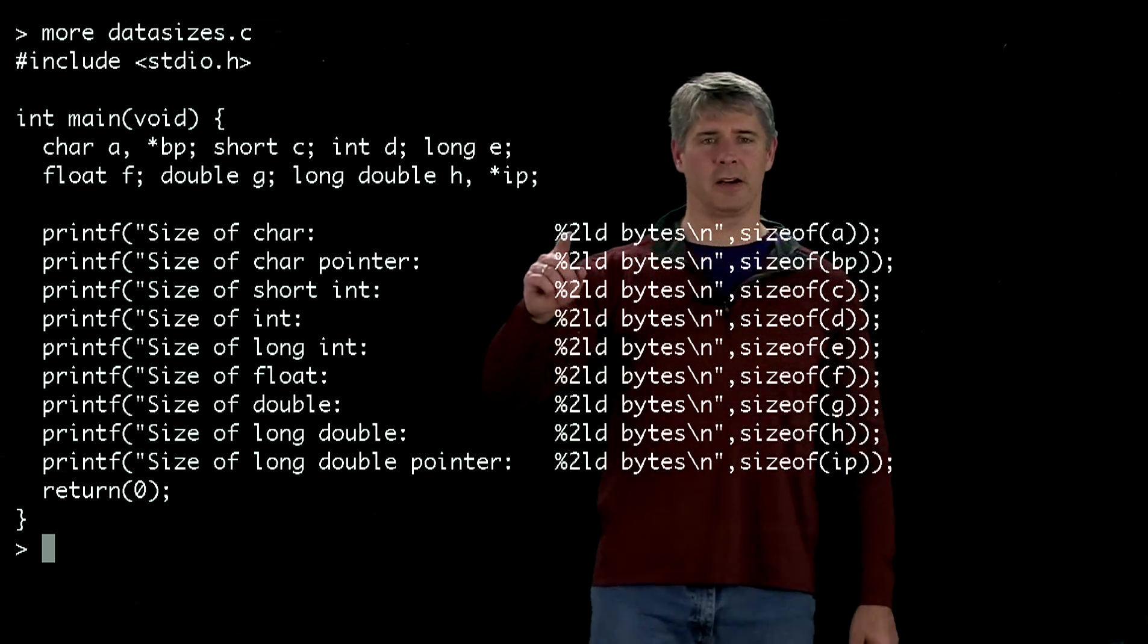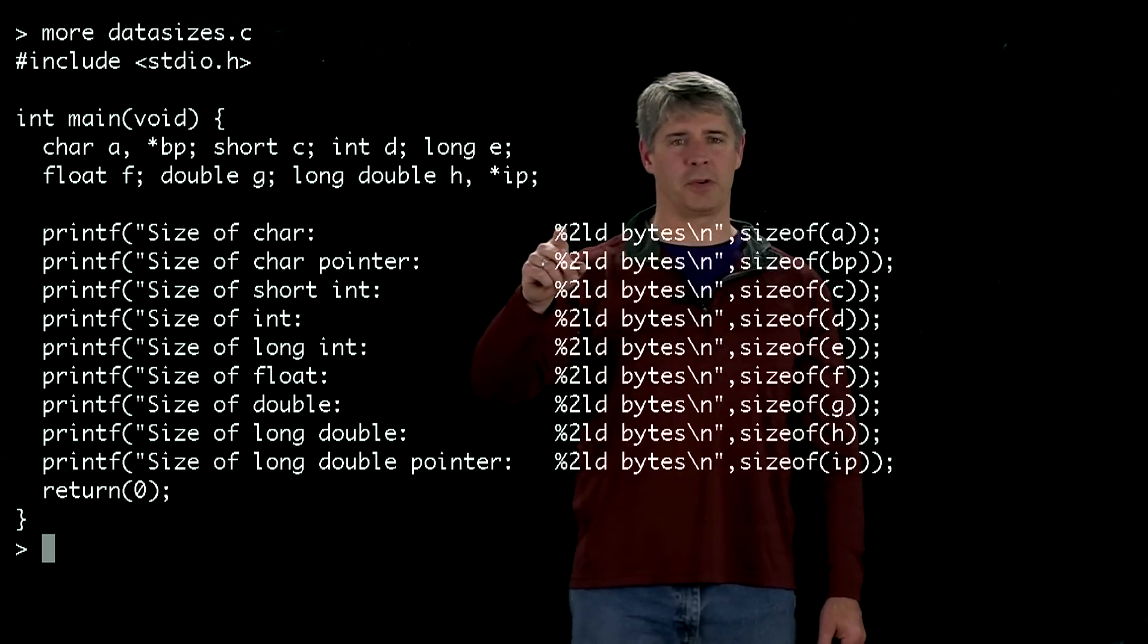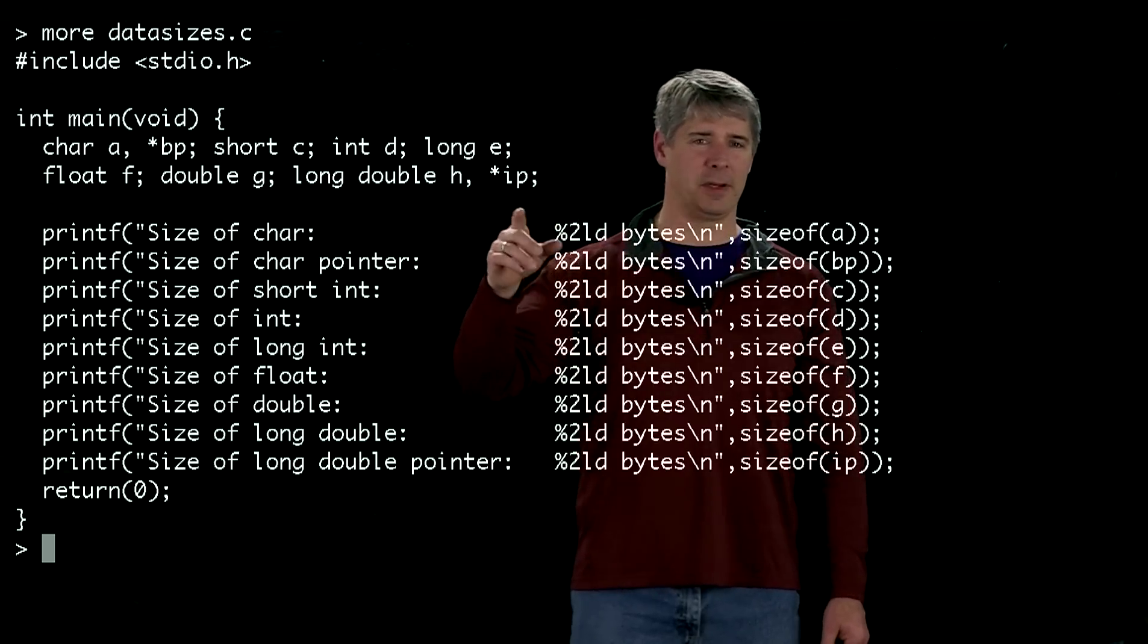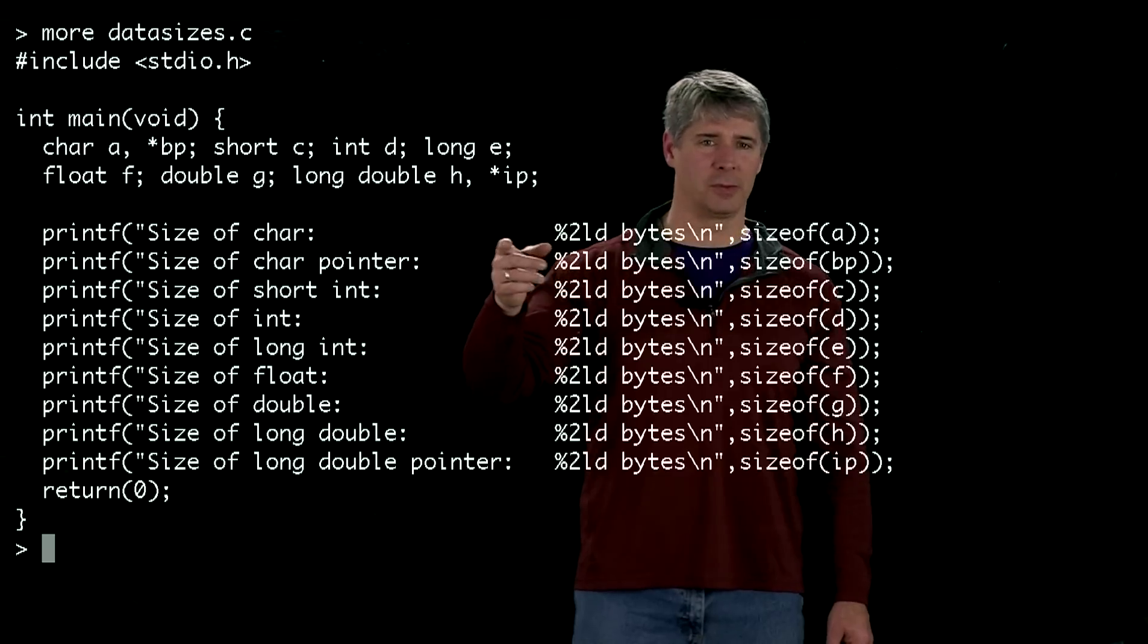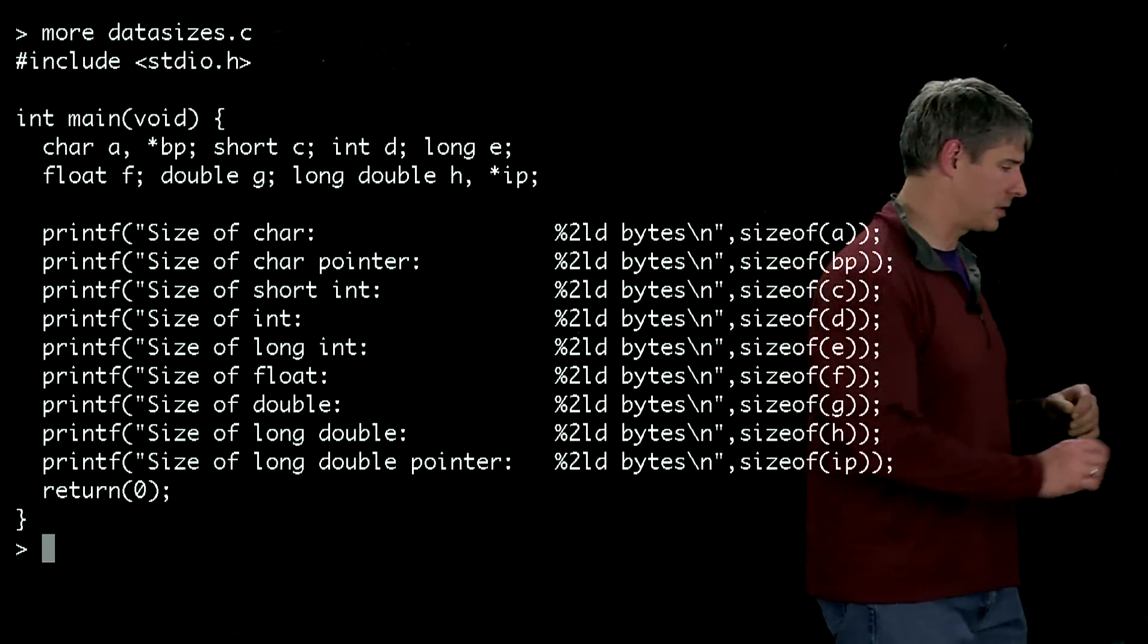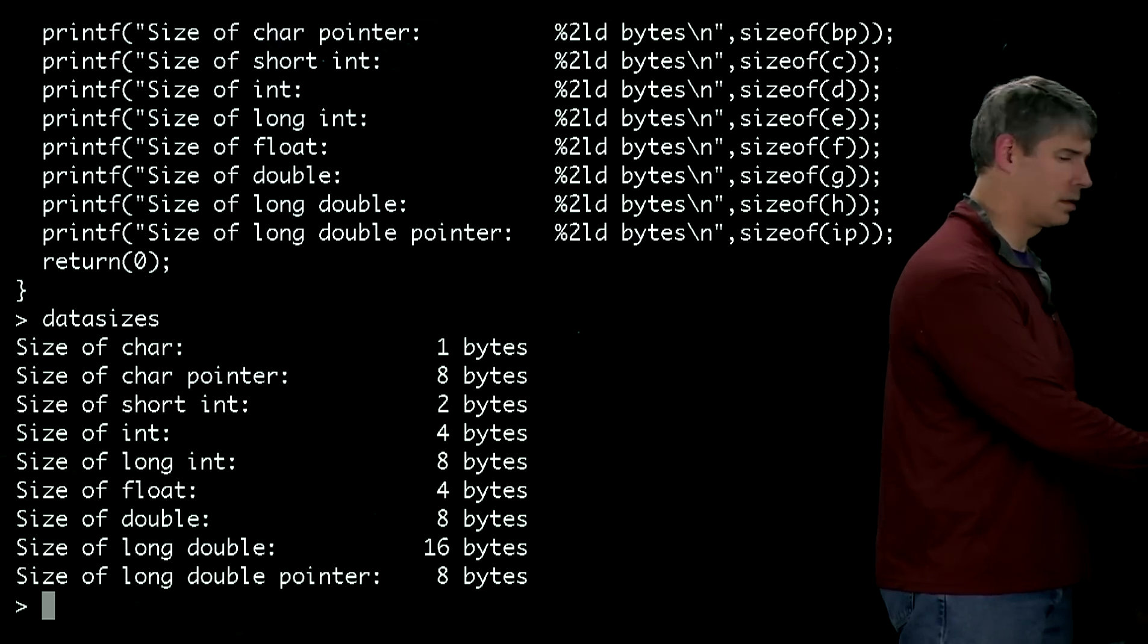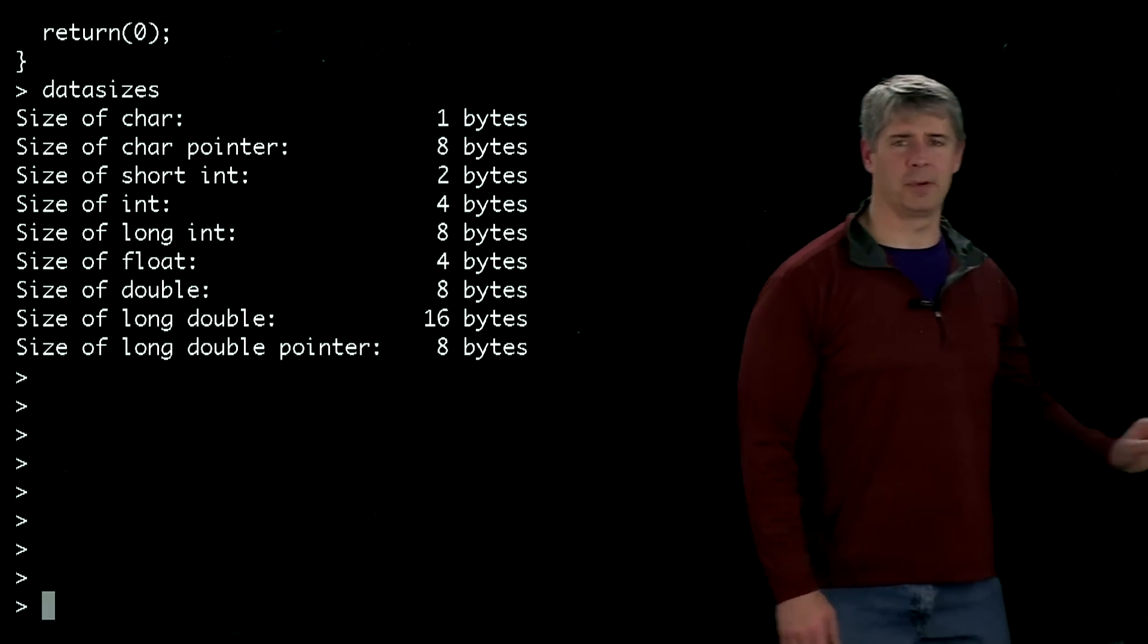And you can see here that it returns a long integer, and that's why we're using %2ld instead of %2d. If it was just a regular int, it'd be %2d, but since it's a long int, we use %2ld. Okay, so we've already compiled this program, so let's go ahead and run it.